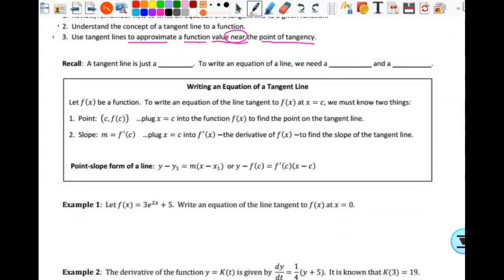So a tangent line is just a line. Just a simple old line. You know how to use lines, right? It's just a line. To write an equation of a line, what do we have to have? What do we write down every time we do it? A point and a slope. A point and a slope. And what does the slope come from related to the function? The derivative. The derivative of the function.